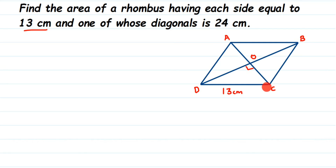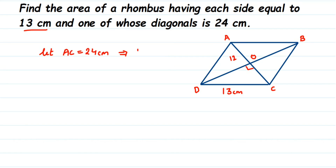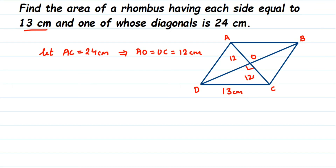At the point where they intersect, all four angles formed are 90 degrees. Let AC equal 24 centimeters. Since the diagonal bisects, AO and OC are each equal to 12 centimeters — because 24 divided by 2 is 12, and 12 plus 12 is 24. So AO = 12 and OC = 12 centimeters.